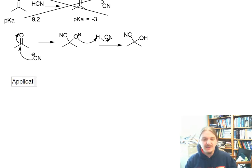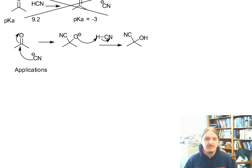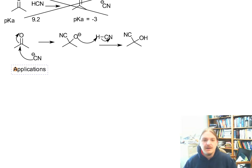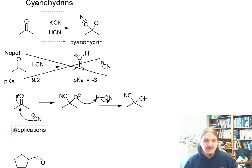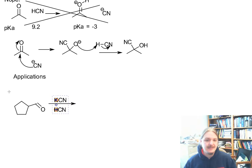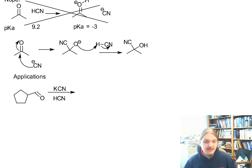Generally, about any aldehyde or ketone can be made into its cyanohydrin. Let's talk a little bit about applications of cyanohydrins. Generally, if you can make something into a cyanohydrin, then perhaps one of the most powerful uses of that is to then convert the nitrile functional group that you just made into another functional group — because the nitrile group can be converted into amines, carboxylic acids, and other things.